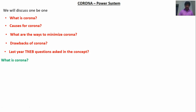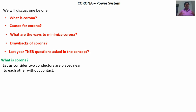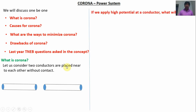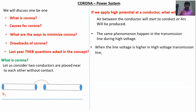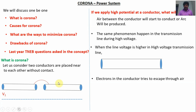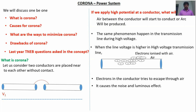Let us discuss what is corona effect. Consider two conductors placed near to each other without contact. Now if I apply a high potential to a conductor, heat will be produced between the two conductors. This same phenomenon happens in the transmission line also. In the high voltage line, when the line voltage is higher, the electrons in the conductor will try to escape through air.